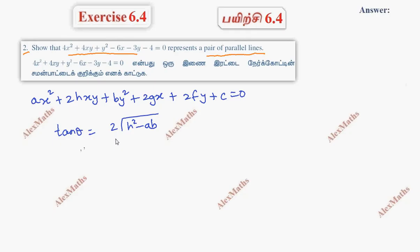Tan theta equals 2 root H squared minus AB divided by A plus B. Now we have to compare the equation.